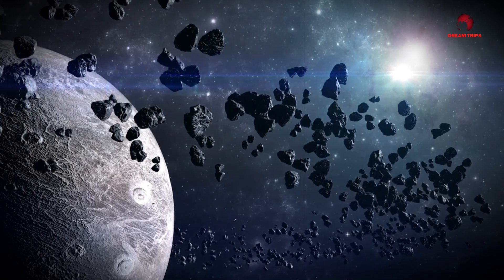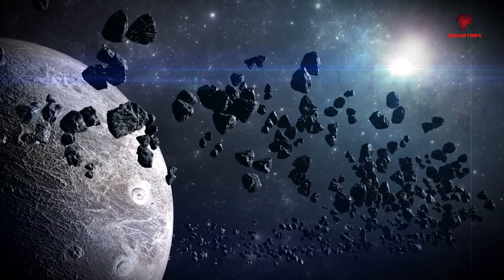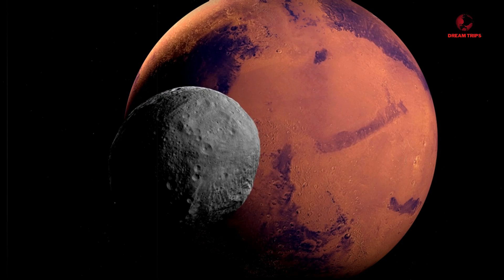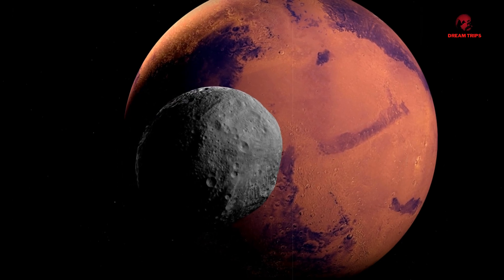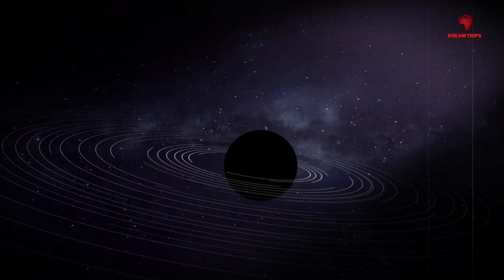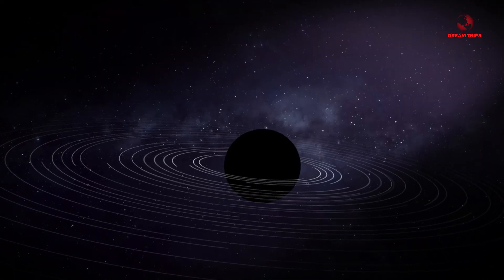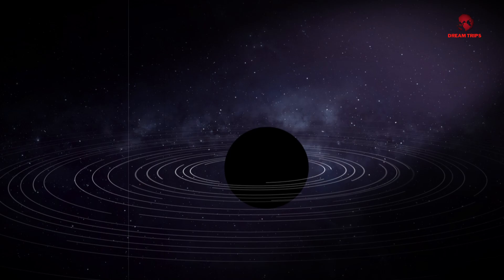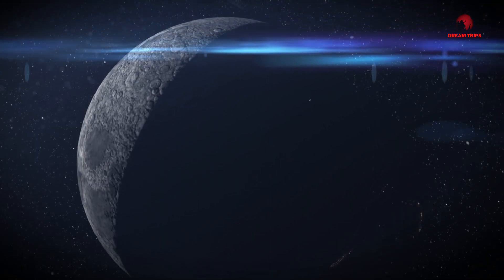The Kuiper Belt, a circumstellar disk outside of Neptune's orbit that holds unstudied remnants from the formation and early evolution of the solar system. Here, we take a deep dive into the Kuiper Belt, what it was called, how exactly its discovery shed light on our solar system.